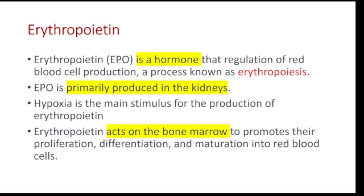The last substance used for the treatment of anemia is erythropoietin. Erythropoietin, or EPO, is a hormone that regulates red blood cell production — a process known as erythropoiesis. Erythropoietin is primarily produced by the kidneys, so the kidneys are the main source. If patients suffer from chronic kidney disease, the result will be decreased erythropoietin.